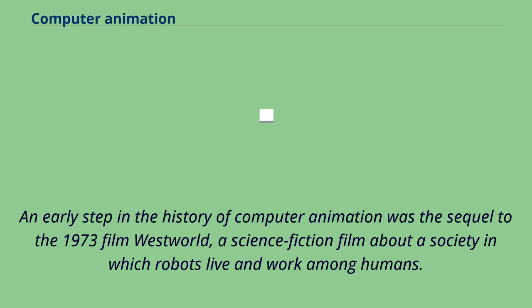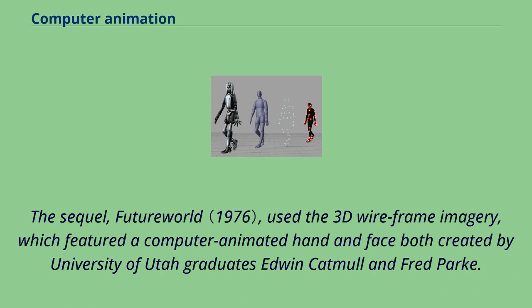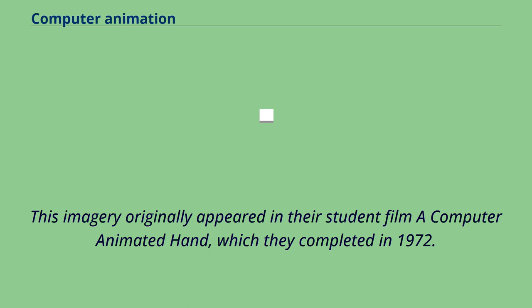An early step in the history of computer animation was the sequel to the 1973 film Westworld, a science fiction film about a society in which robots live and work among humans. The sequel, Future World, used 3D wireframe imagery, which featured a computer-animated hand and face both created by University of Utah graduates Edwin Catmull and Fred Park. This imagery originally appeared in their student film A Computer Animated Hand, which they completed in 1972.